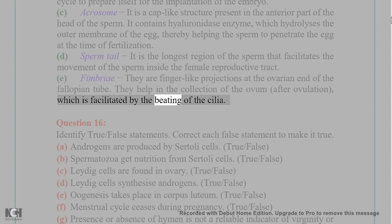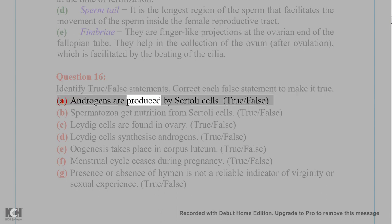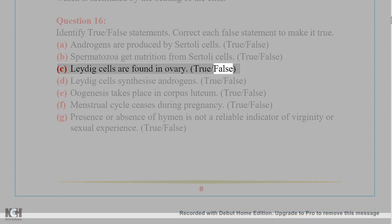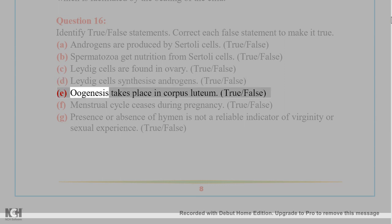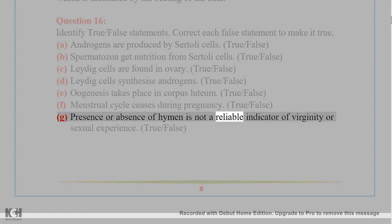Question 16: Identify true/false statements. Correct each false statement to make it true. A. Androgens are produced by Sertoli cells. True/False? B. Spermatozoa get nutrition from Sertoli cells. True/False? C. Leydig cells are found in ovary. True/False? D. Leydig cells synthesize androgens. True/False? E. Oogenesis takes place in corpus luteum. True/False? F. Menstrual cycle ceases during pregnancy. True/False? G. Presence or absence of hymen is not a reliable indicator of virginity or sexual experience. True/False?